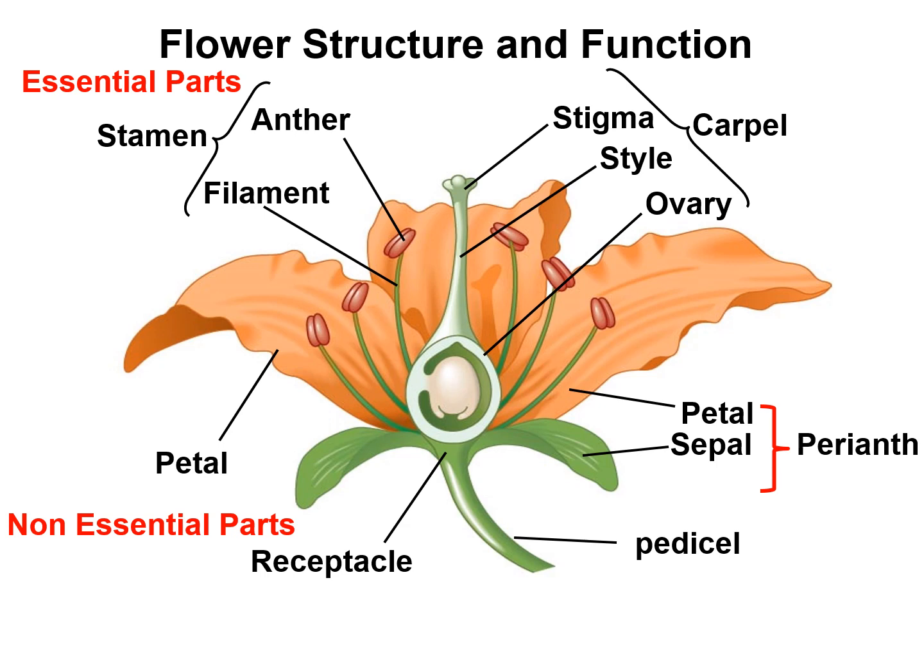We can also divide flowers into essential and non-essential parts. The essential parts of a flower are those that are directly associated with reproduction — for example, stamen and carpel. Non-essential parts are those which either protect the reproductive parts or make the flower attractive for pollination — for example, petals and sepals.